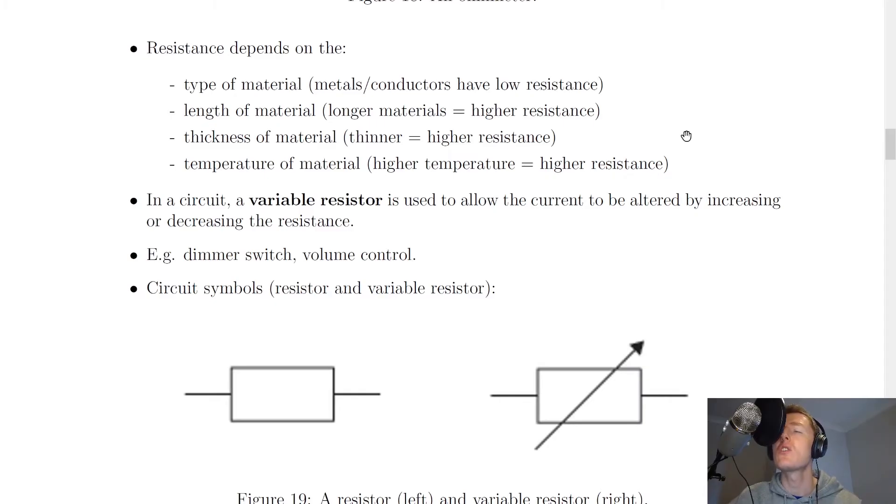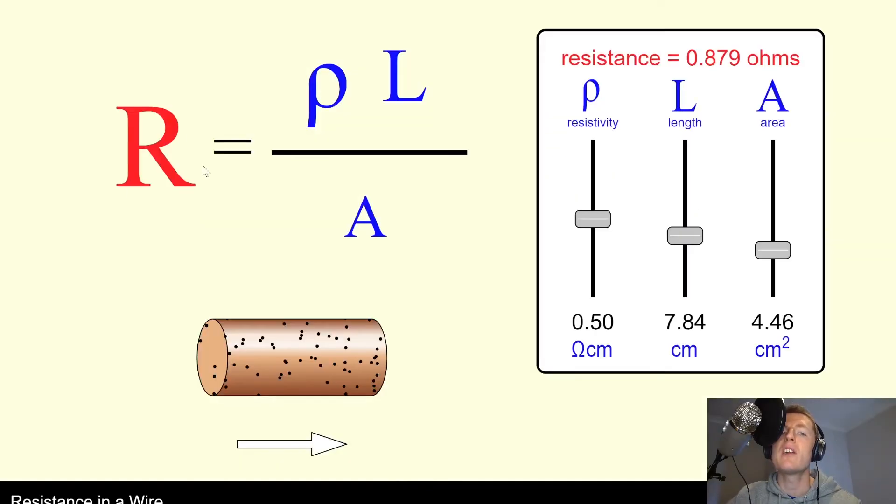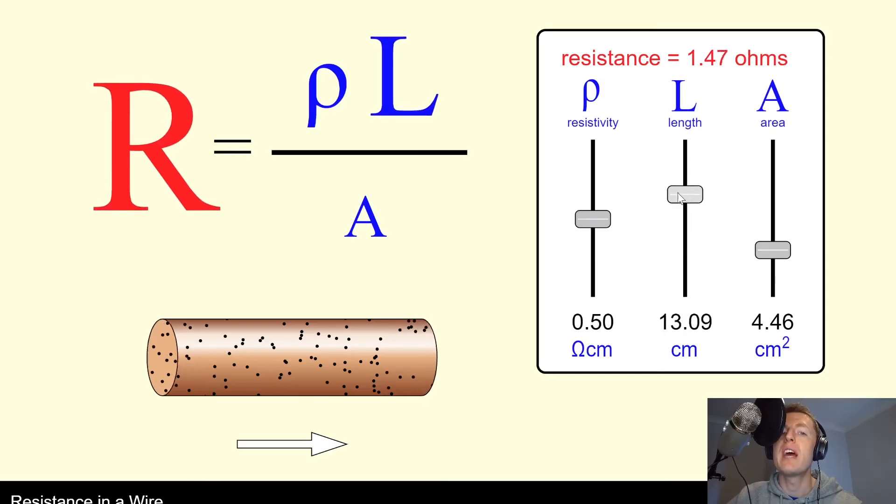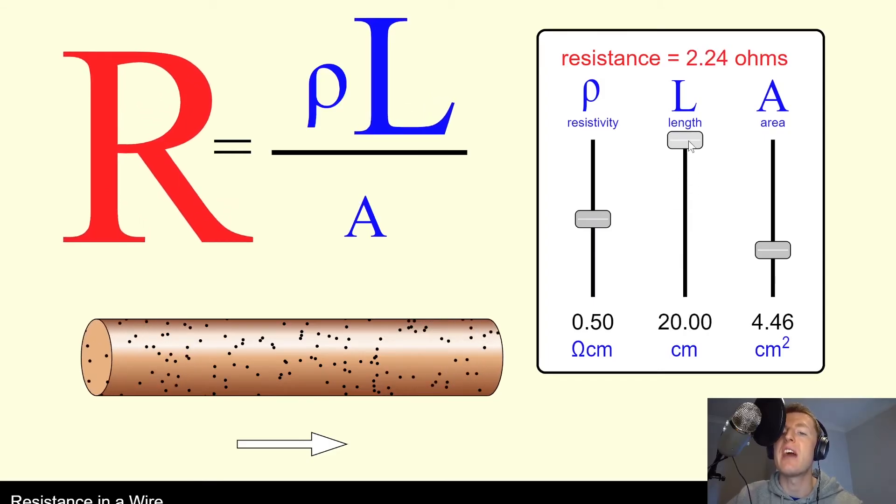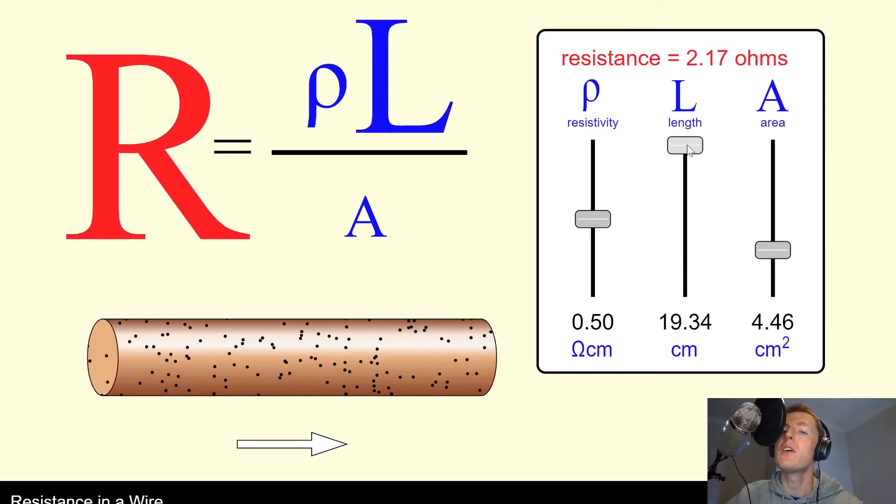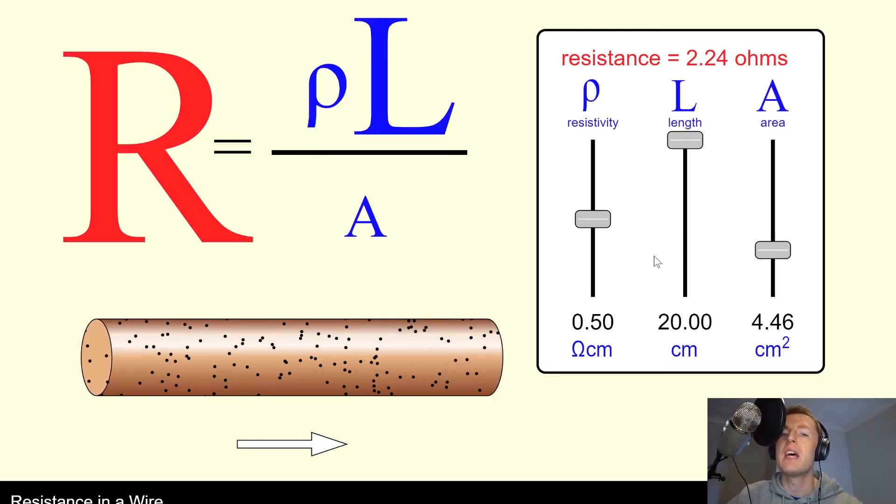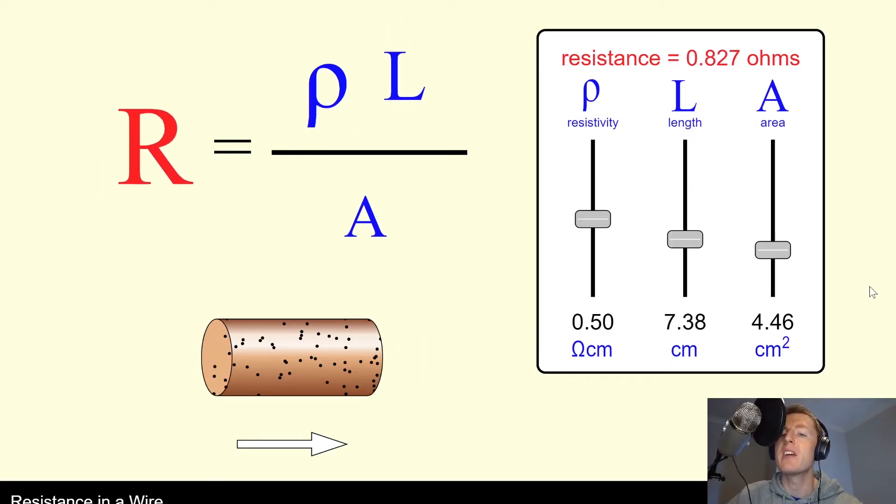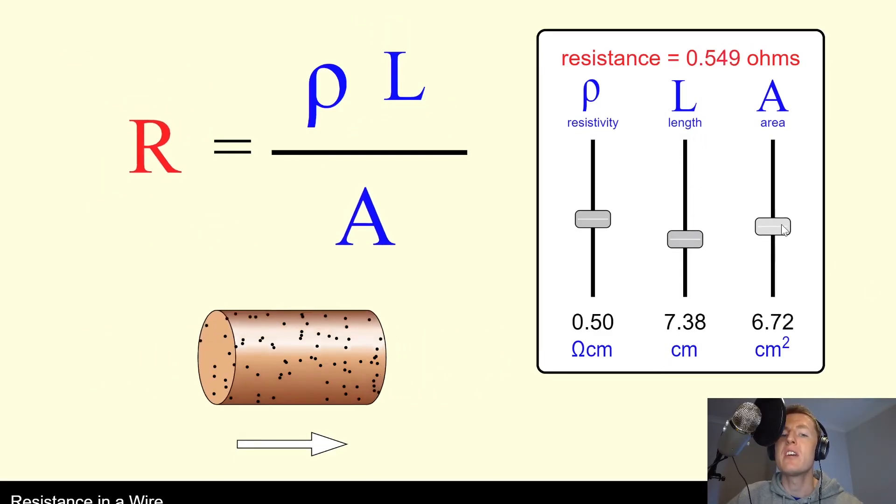Just to show you a quick simulation of this: if R is my resistance, L is the length of my wire, and A is the area which represents the thickness, then you'll notice that if I increase the length first of all, then my resistance increases. As we said, that's because there's further for the electrons to travel in the wire.